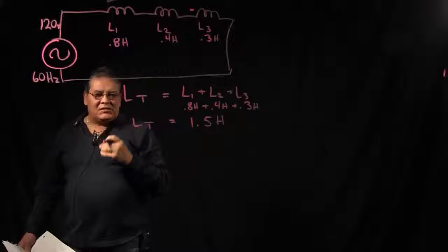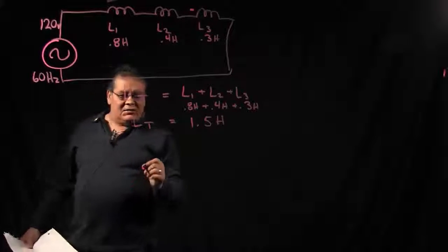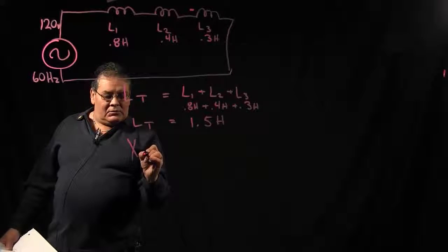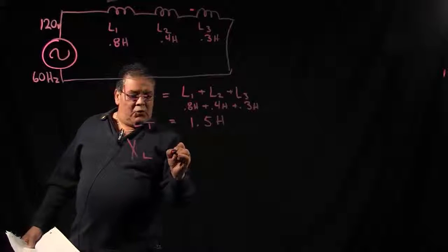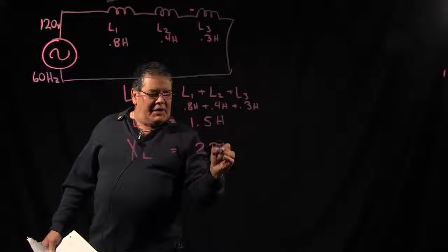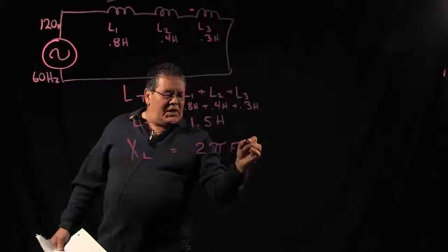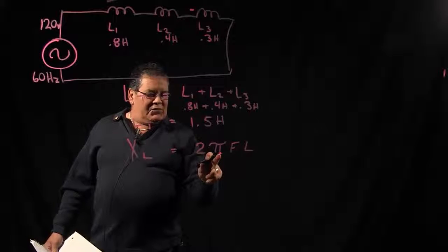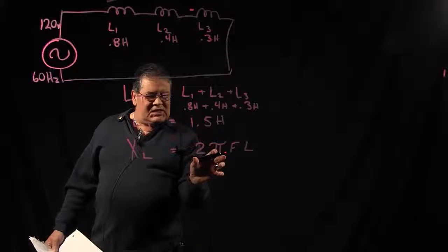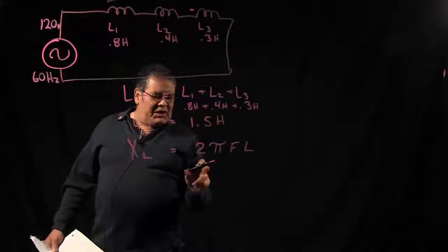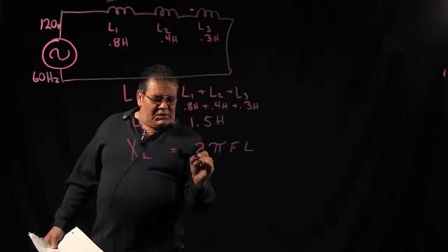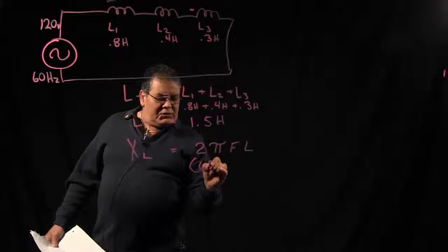Now that we have our total inductance, we can find our inductive reactance. For inductive reactance, our formula is 2πFL. Now pi is 3.14. What I generally do is I will go ahead and do that calculation, because the fewer times you push buttons on the calculator, the less chance of error. So 2 times 3.14 equals 6.28.